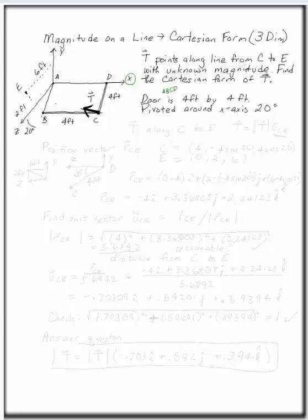you'd find this position. We want to find T, this vector along the line from C to E. To do that, the vector is given by its magnitude times the unit vector in that direction. So we have to find that unit vector.